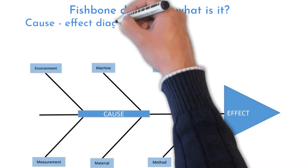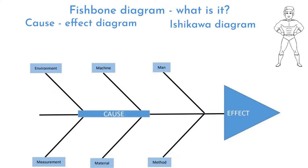Welcome to Six Sigma Mania. Fish Bone Diagram, Cause-Effect Diagram or Ishikawa Diagram. There are three names of one simple tool. Simple, but very powerful.